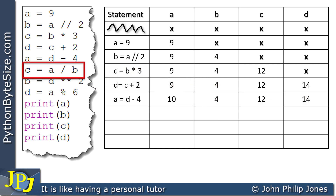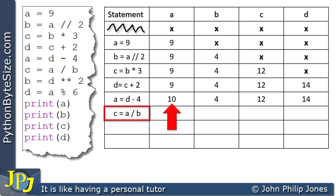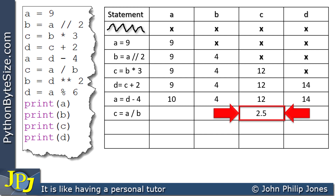We go on to the next program statement. The arithmetic operator here is a single forward slash — regular division — which will divide A by B. A is 10 and B is 4, so 10 divided by 4 is 2.5. C will be given the value of 2.5. This division with a single forward slash, as opposed to the two forward slashes before, does a division as we would normally expect in real life.